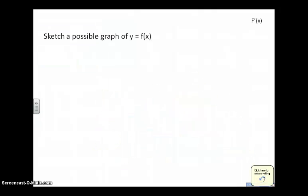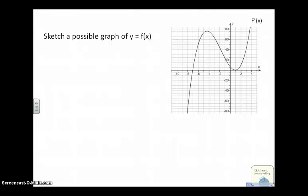Now we have one more example: sketch a possible graph of f, given the graph of f prime. This reverses what we've been doing — we look at the derivative function and get information from it to graph the original function. We're out of time on this video, so we'll pick this up in the next video.